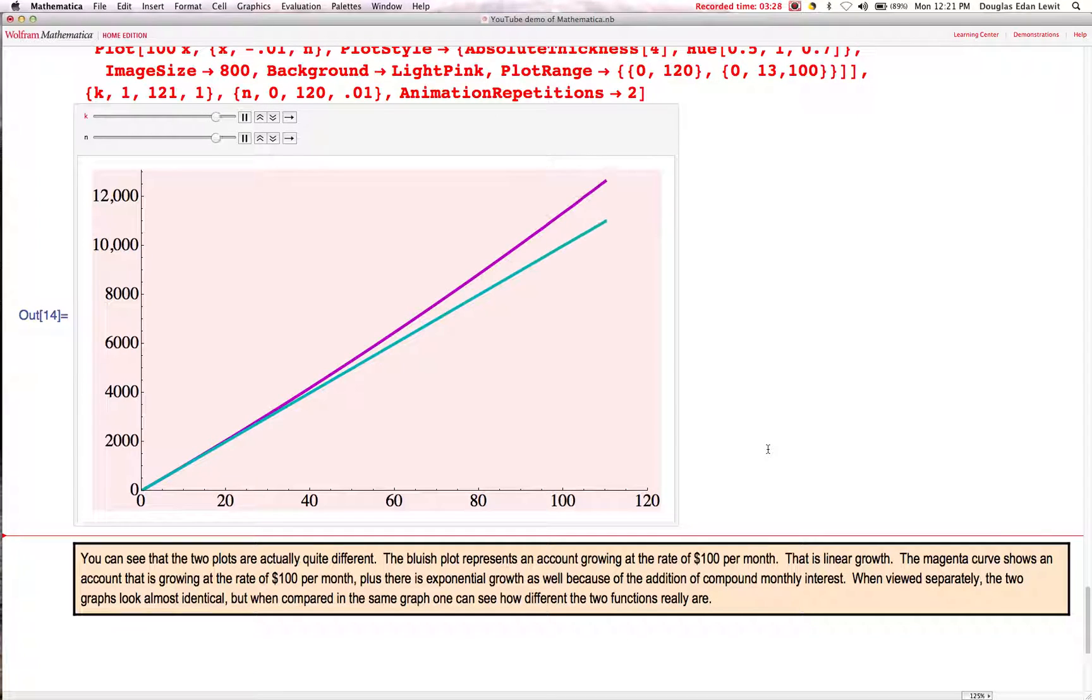Okay. Y equals 100x is the turquoise line. That is the straight turquoise line. What that means is simple. You're simply saving $100 every single month. And we're tracking this for the first 10 years, or 120 months.